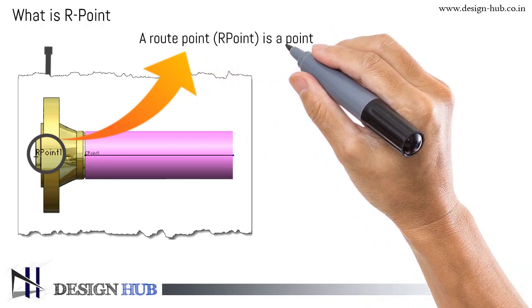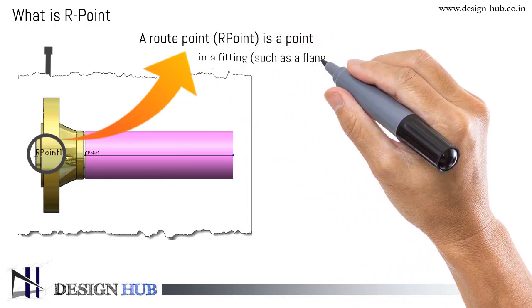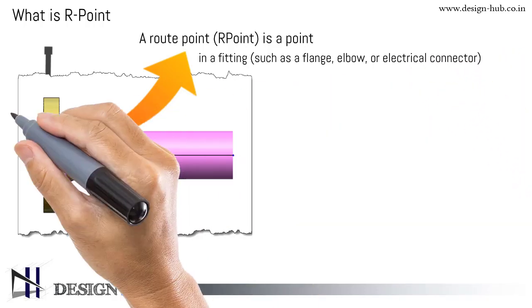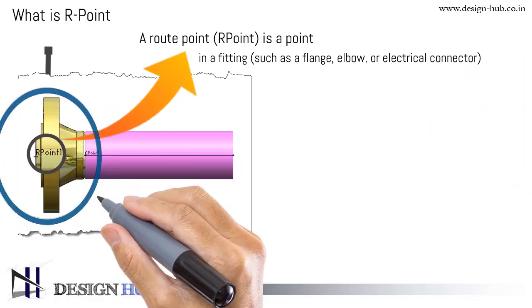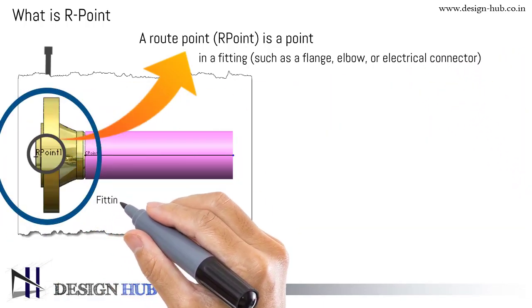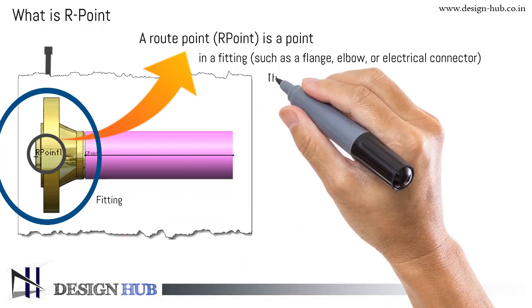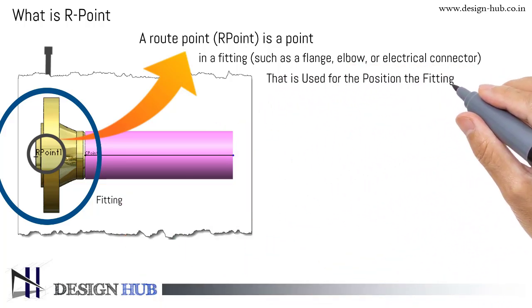R point is a point in fitting that is used to position the fitting at an intersection or endpoint in the route sketch.